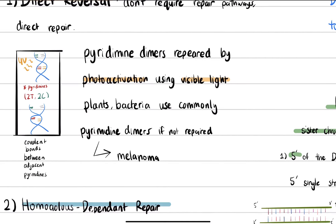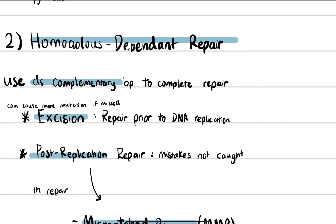The next thing to highlight is homology-dependent repairs. Our DNA has a complementary base pair double strand, and we can use it as a template. There are two kinds of homology-dependent repairs. The first is excision repair, which occurs prior to DNA replication. Before DNA is replicated, there is a quick scan to check if everything is fine.